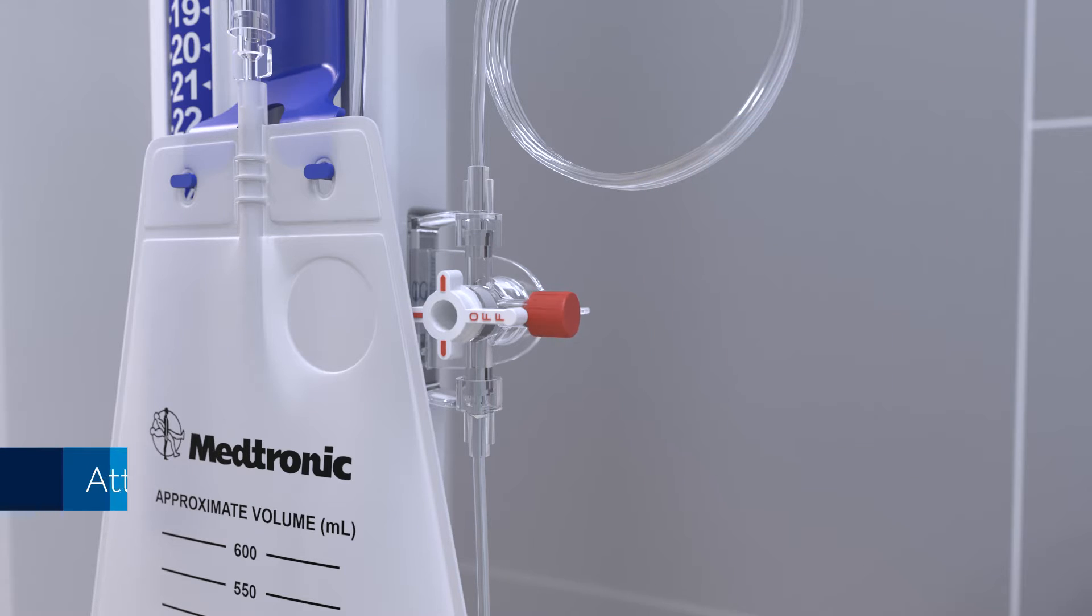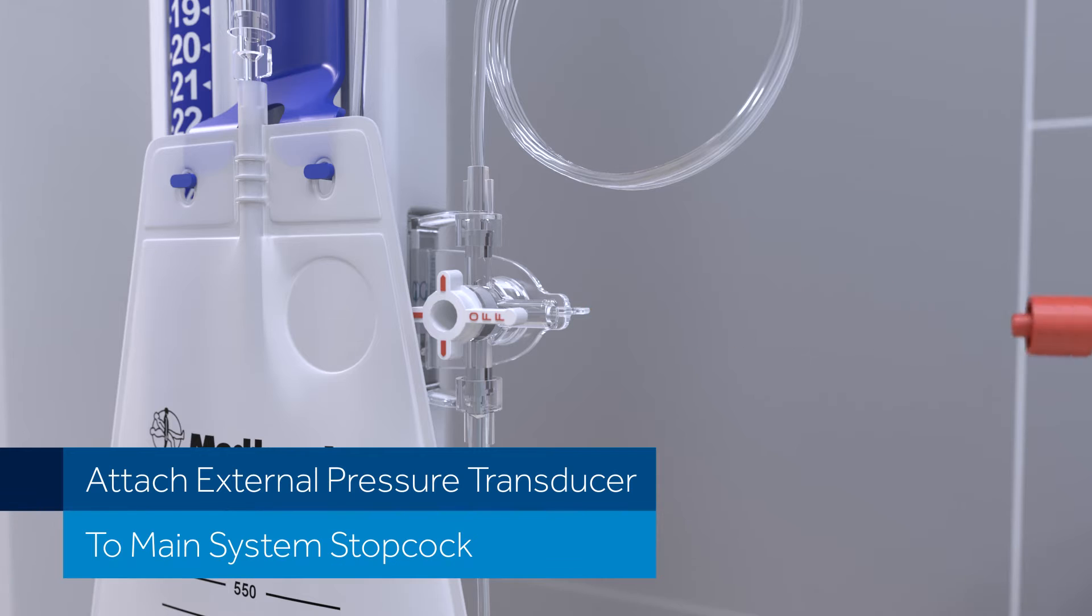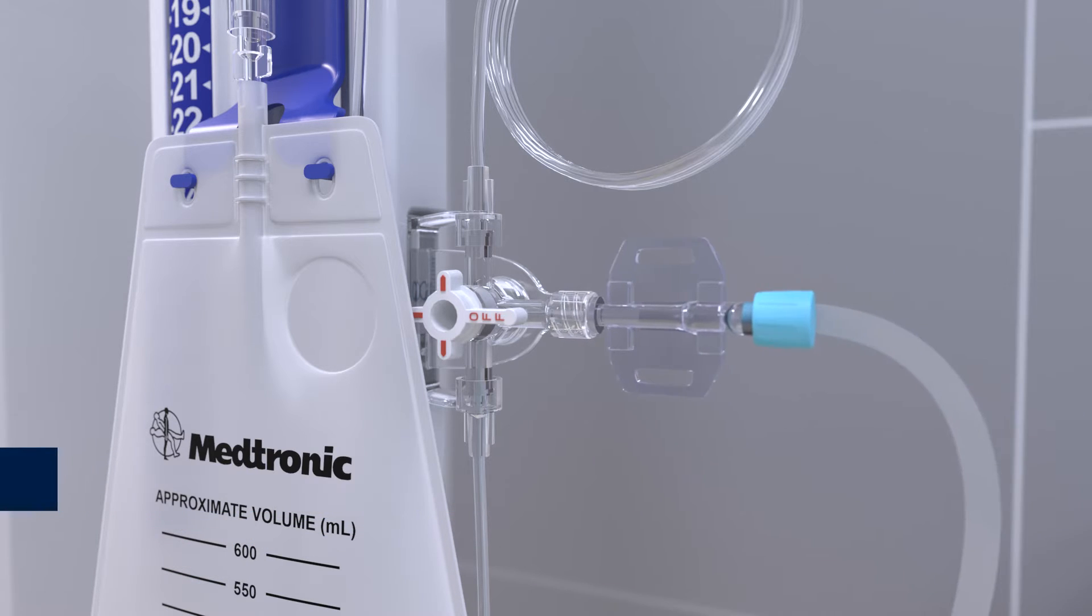A pressure transducer can be attached to the main system stopcock by removing the red cap and threading the transducer onto the stopcock lure fitting.